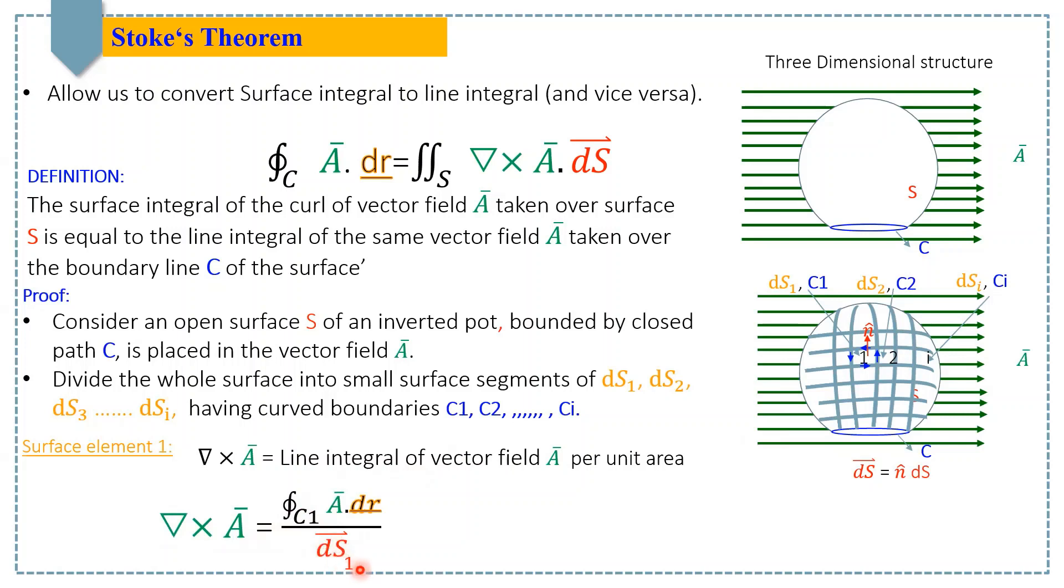Here we have per unit dS1, which can further be written as surface integral del cross A dot dS1 is equal to line integral A dot dr. This is equation number one.